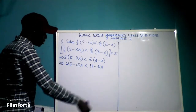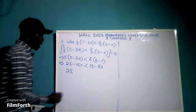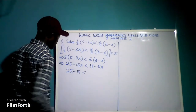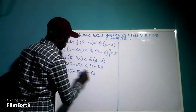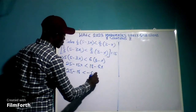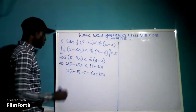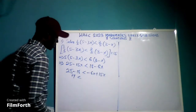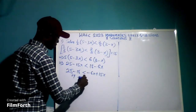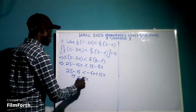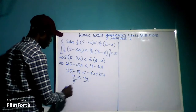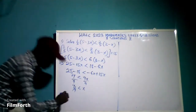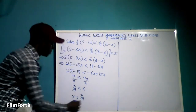Now we rearrange: bring all x terms to one side. Taking 18 from the right to the left gives minus 18, and taking negative 15x from the left to the right gives positive 15x. So we have 25 minus 18 less than negative 6x plus 15x, which gives 7 less than 9x. Dividing both sides by 9, we get 7 over 9 less than x, which is the same as x greater than 7 over 9. That is the answer.